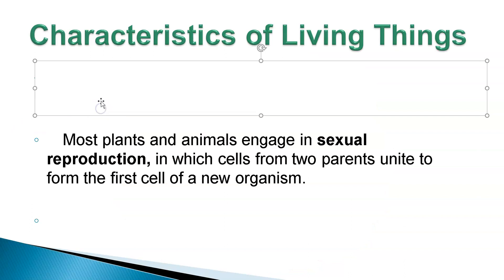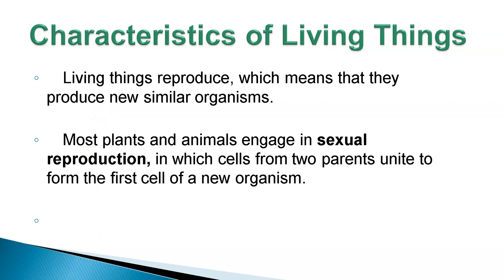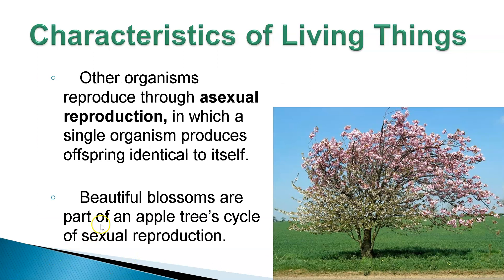Living things reproduce. There are two types of reproduction: sexual and asexual. Sexual reproduction is the uniting of two sex cells — sperm and egg. Asexual reproduction is when the parent produces a clone of itself. This can be done through binary fission, budding, or regeneration. Like some starfish — you can cut them a certain way and they can grow into two whole organisms. That is an example of asexual reproduction.